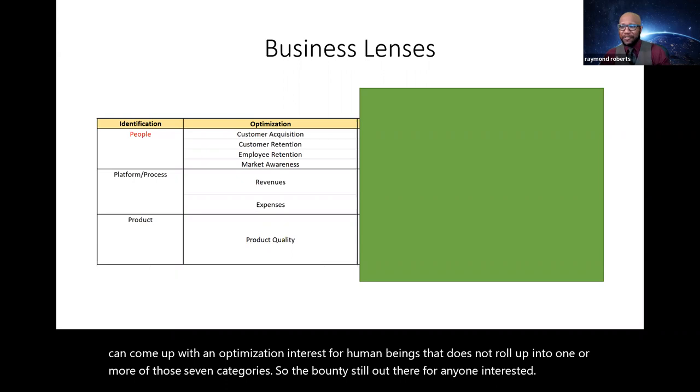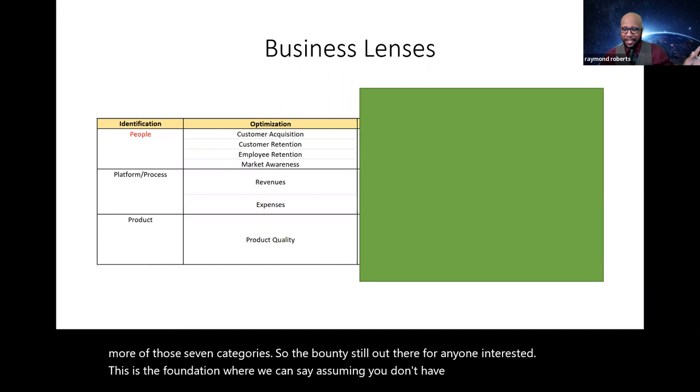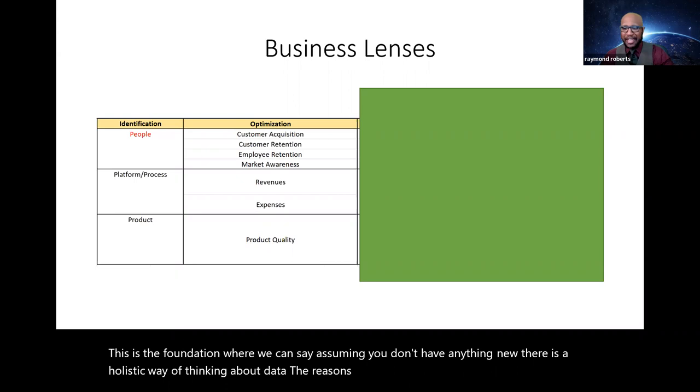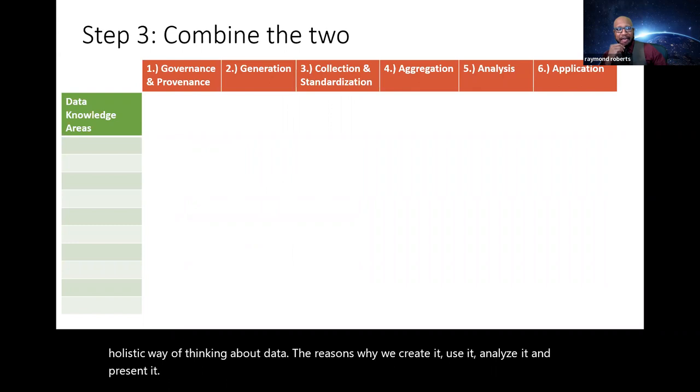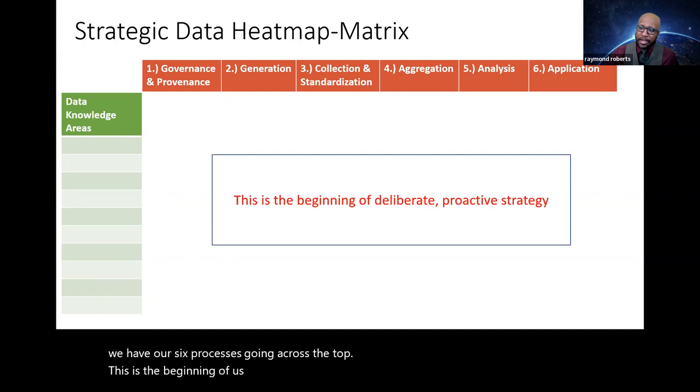I've been sharing this conversation for over 10 years. I've challenged anyone a thousand dollars. If you can come up with an optimization interest for human beings that does not roll up into one or more of those seven categories. So the bounty's still out there for anyone interested. This is the foundation where we can say, assuming you don't have anything new, there is a holistic way of thinking about data. The reasons why we create it, use it, analyze it, and what we're doing. So this is our next step. We're going to combine them. Again, we have our data knowledge areas, and just imagine all 23 are going down, and then we have our six processes going across the top.